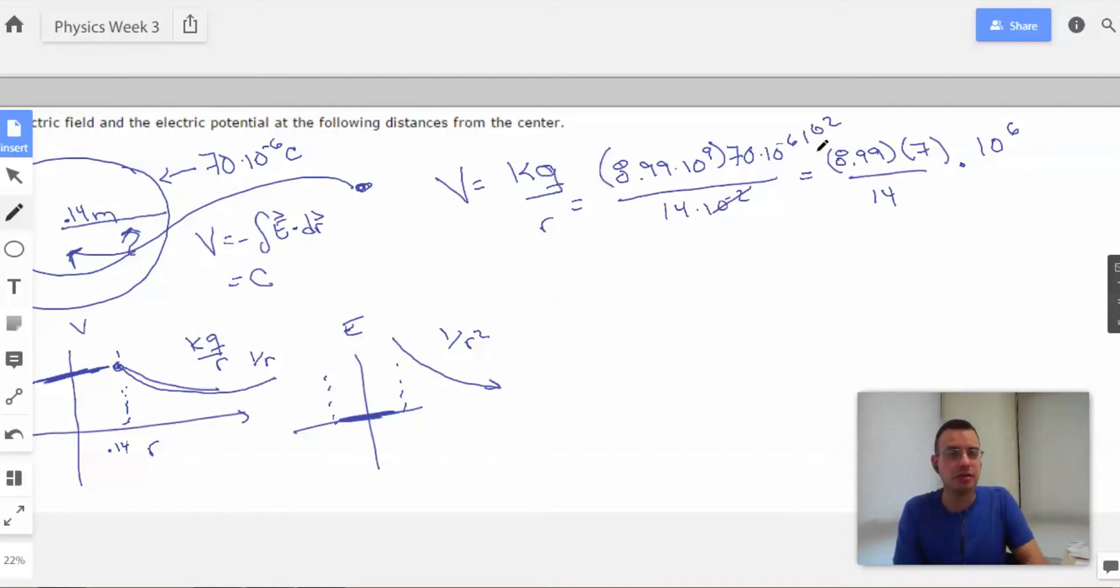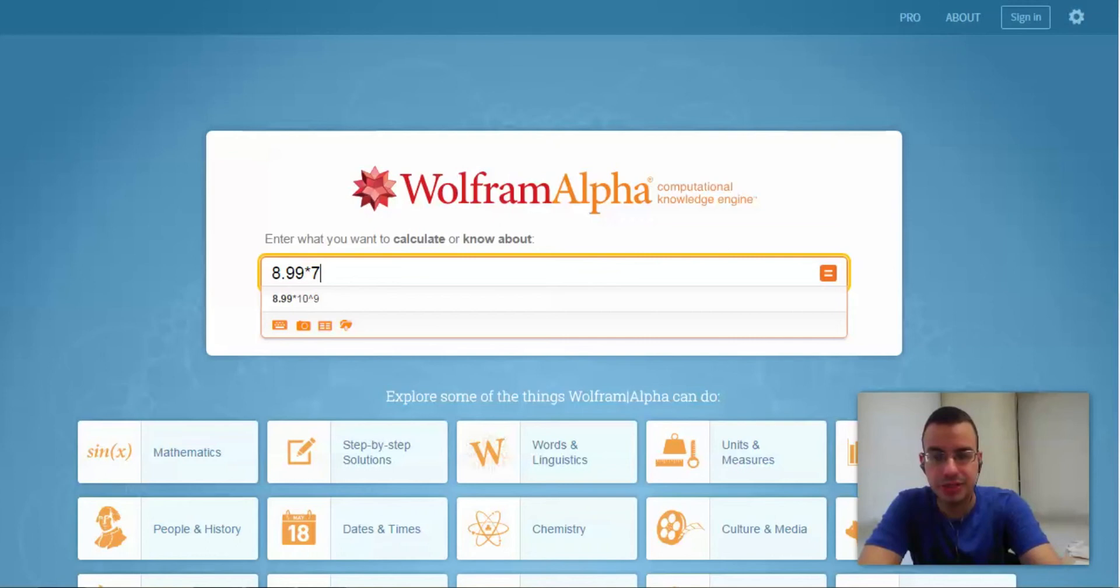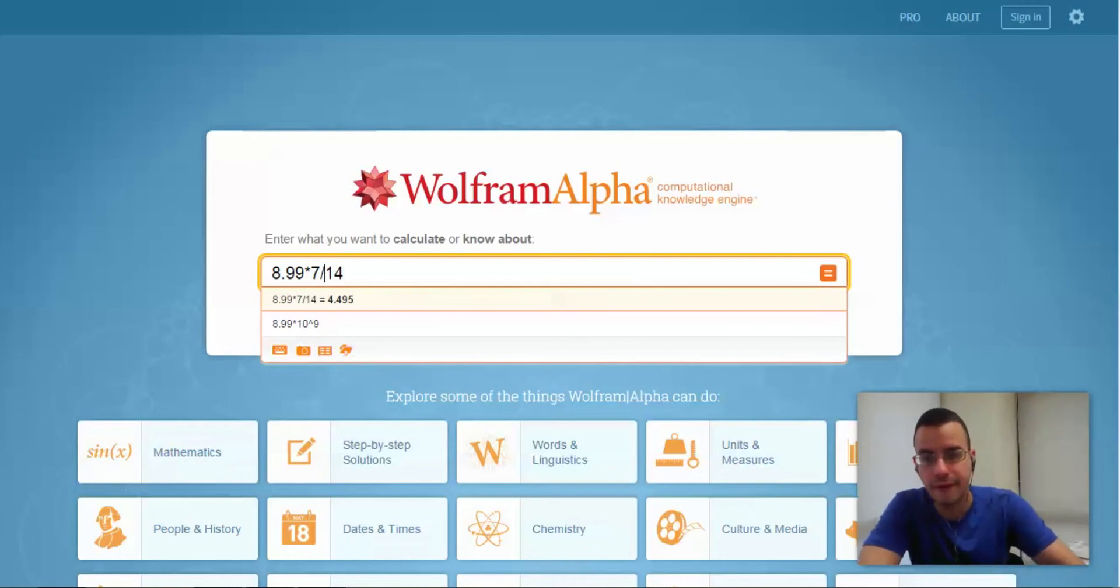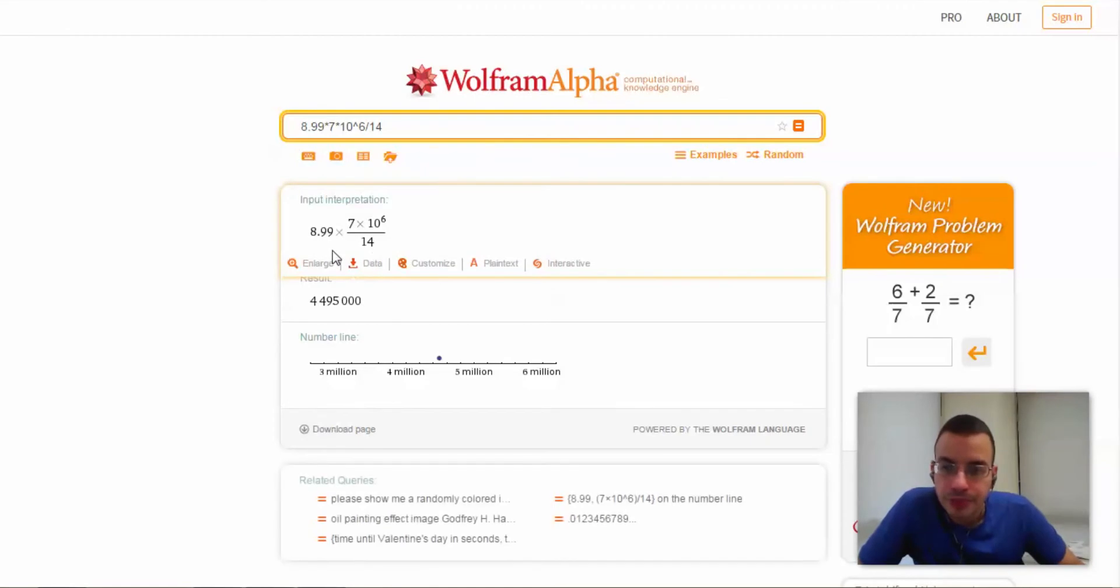Probably close. Alright. Then we're just going to Wolfram. 8.99 times 7 divided by 14 times 10 to the 6th.